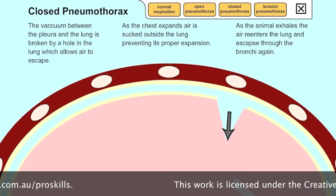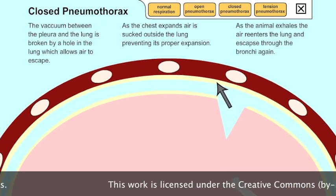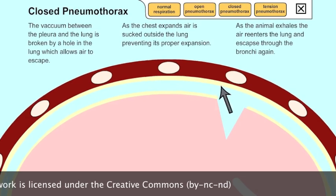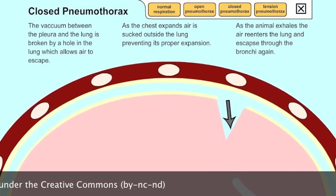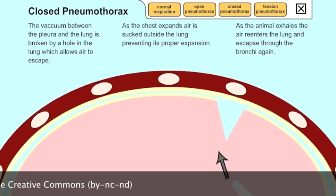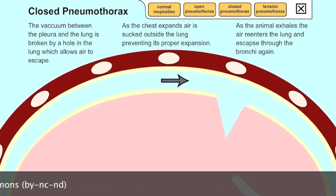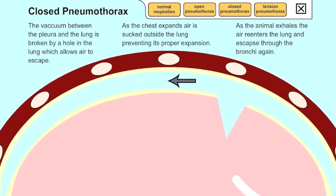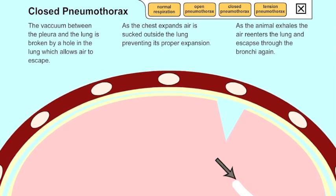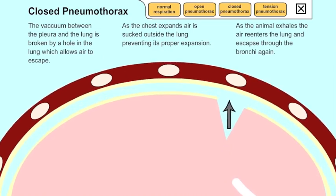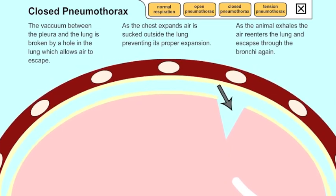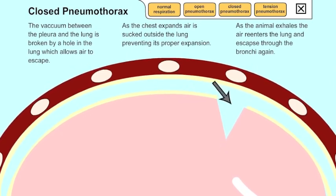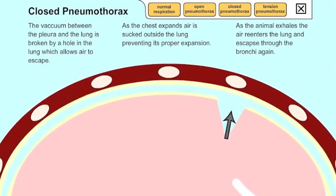In a closed pneumothorax we do not have a wound penetrating through the chest wall. However, the vacuum within the pleura and the lung has been broken by a hole in the actual lung itself. This hole in the lung allows the air to escape. As the chest expands, air is sucked outside the lung and this prevents its proper expansion.